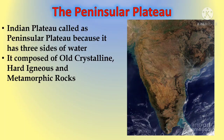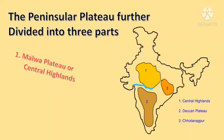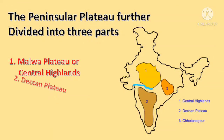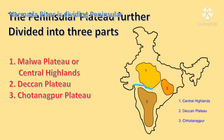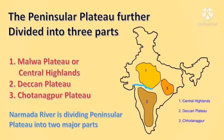The Indian Plateau is called the Peninsular Plateau because it has water on three sides. It is composed of old crystalline, hard igneous, and metamorphic rocks. It has a tilt towards the east, and the southernmost point of this Peninsular Plateau is Cape Kanyakumari. The Peninsular Plateau is further divided into three parts: Malwa Plateau or Central Highlands, Deccan Plateau, and Chota Nagpur Plateau.